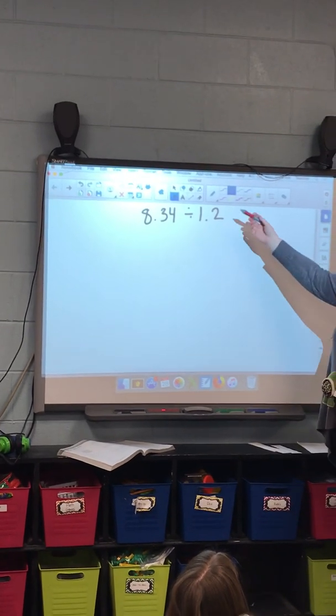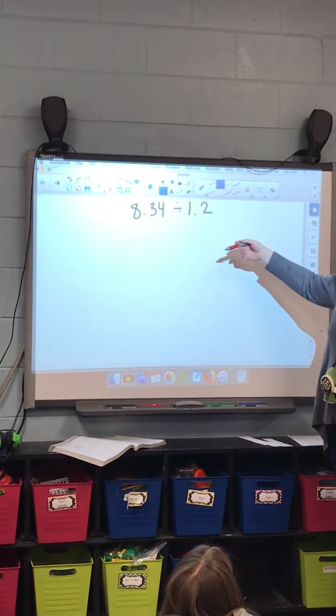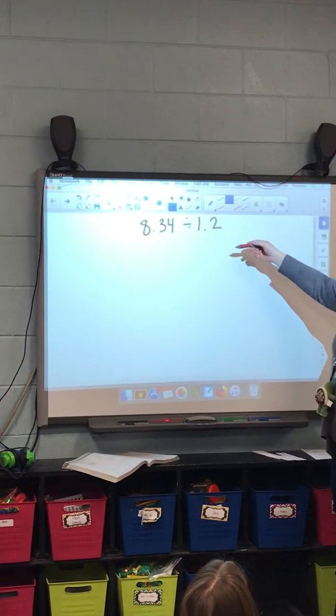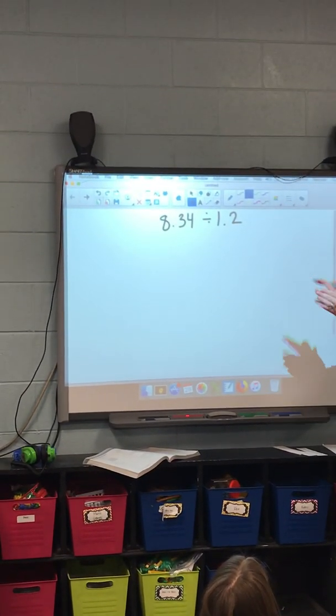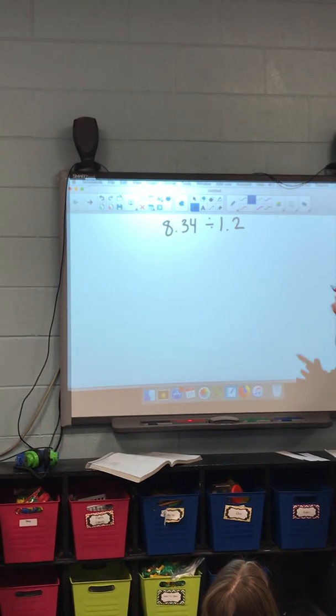So, to make this a whole number, what would we have to do, J.P. Wilson? You would multiply each number by 10. You're going to multiply each number by 10. And then in turn of that, what's going to happen to the numbers?